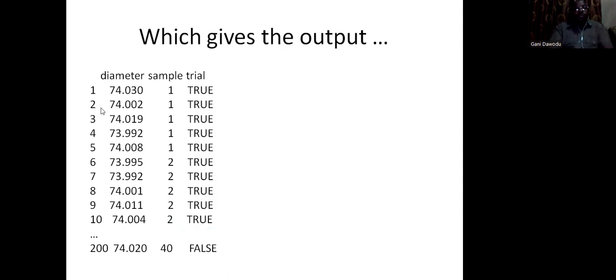As you can see, there are 200 cases. The columns are diameter, sample, and trial. Diameters contain the readings. Sample contains the samples. In here, there are 40 samples, but each of them is having five distinct readings.